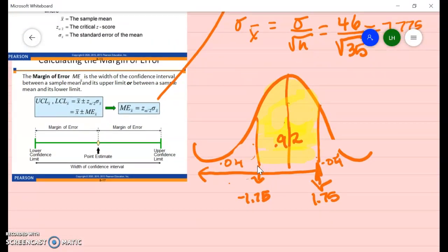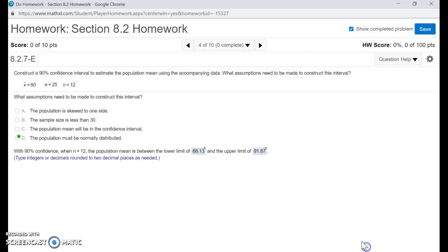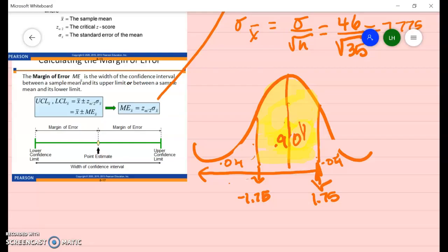If we change this here to make this .90, what that means is the tail is going to be .05 and .05 here.